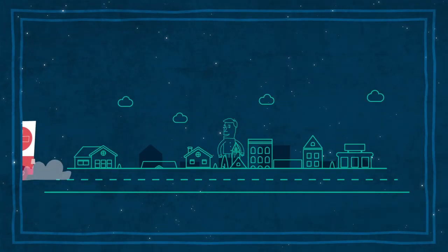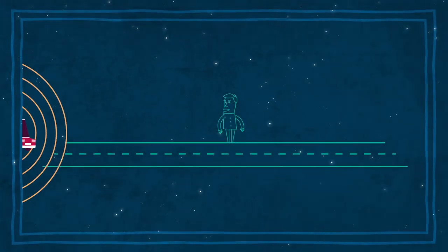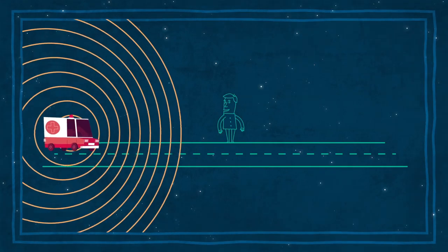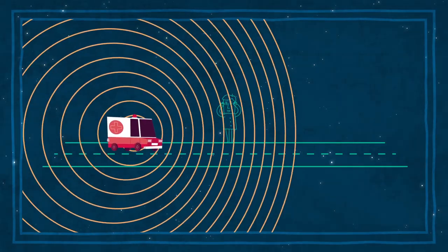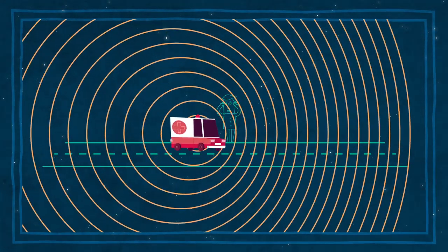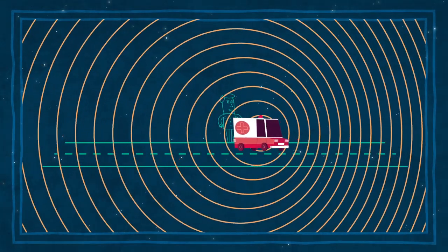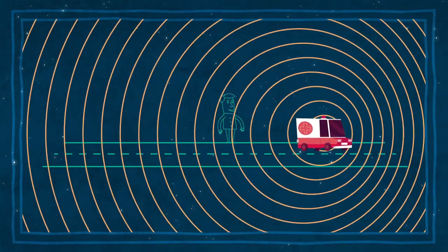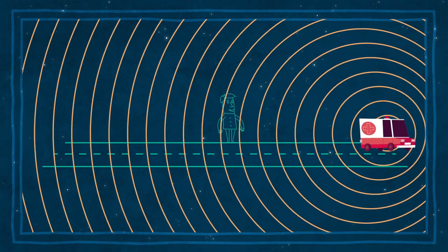A sound wave emitted by a source moving towards us is compressed. A wave emitted by a source moving away from us gets stretched out. This frequency change is known as the Doppler effect. It makes us hear different pitches in the sound.